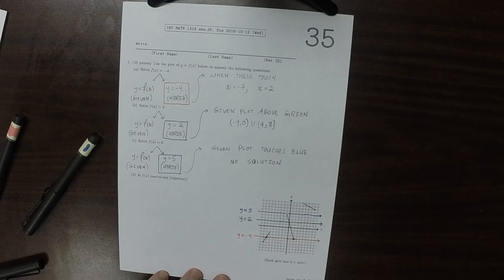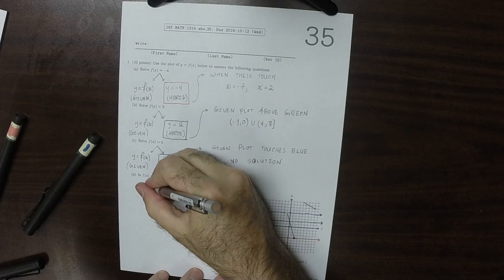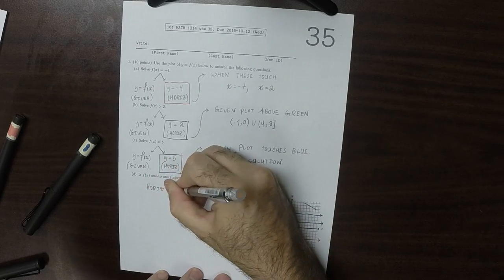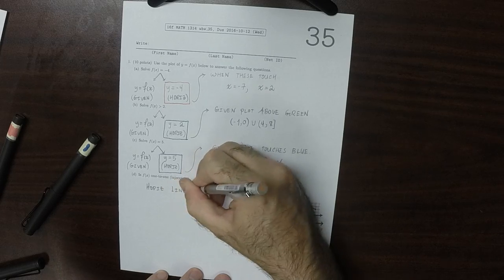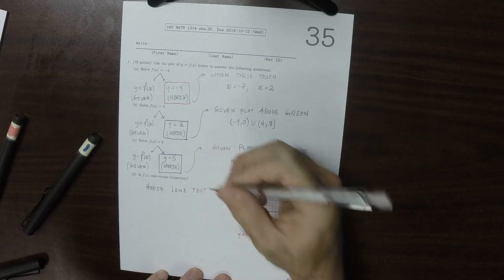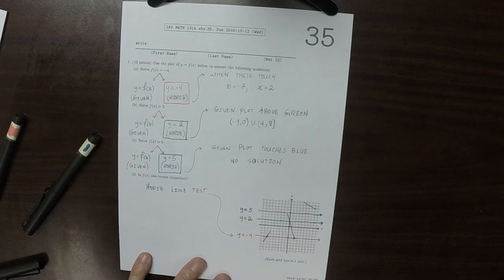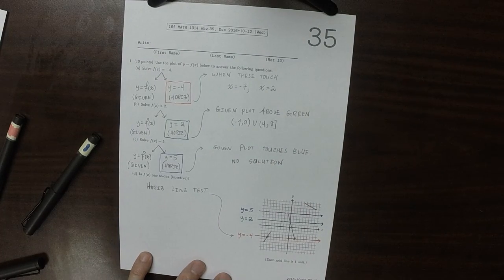And then to part d is f 1 to 1, or injective. So we can use the horizontal line test for this. And part a gave us a horizontal line with two intersections.